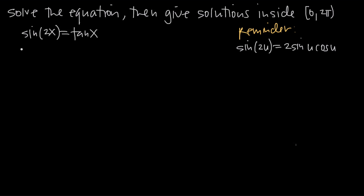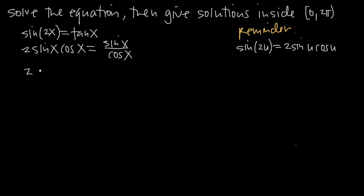So we can change sine of 2x to be 2 sine of x cosine of x, equal to tangent of x. But we know that tangent is the same thing as sine divided by cosine, so we can write sine of x divided by cosine of x instead. Now what we want to do is multiply both sides by cosine of x. So we get 2 sine of x, and cosine of x times cosine of x gives us cosine squared of x, and we're just left with sine of x on the right.